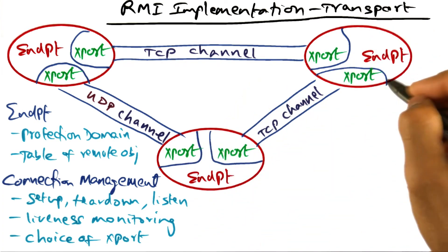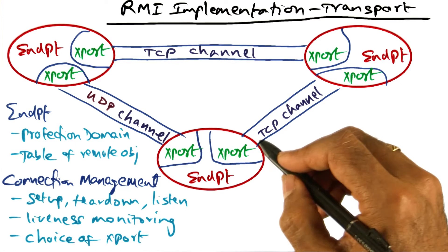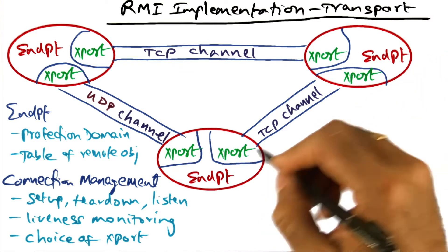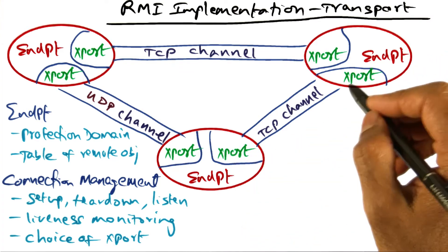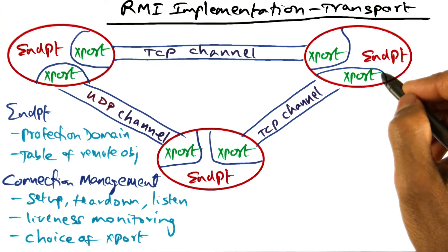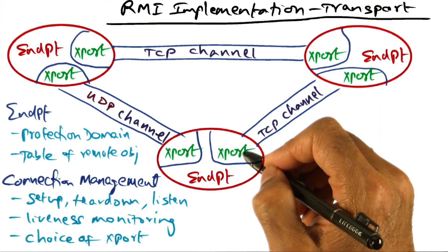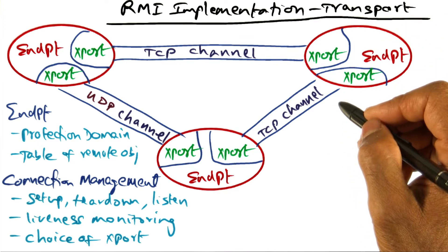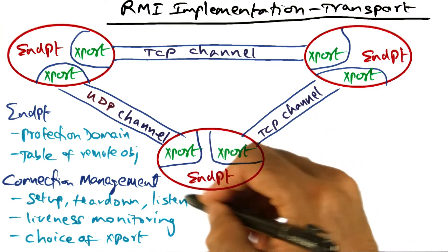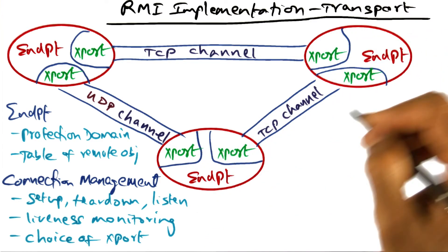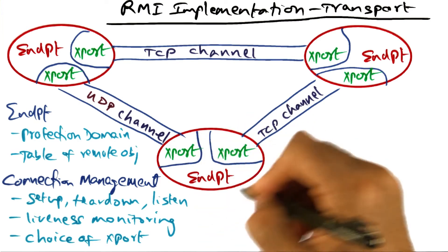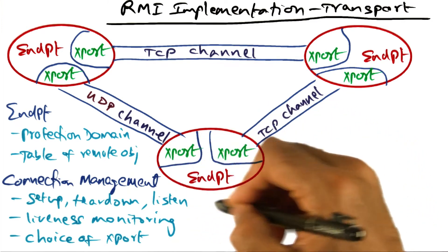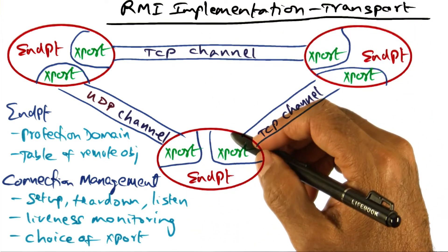Similarly, between another pair of endpoints, the connection manager may decide to use a TCP channel. So the transport being used is a TCP connection at both ends. Notice that a given endpoint can have different transport for talking to different endpoints depending on a variety of parameters — what is the best way for this endpoint to talk to another is all part of connection management in the transport layer of the Java runtime.